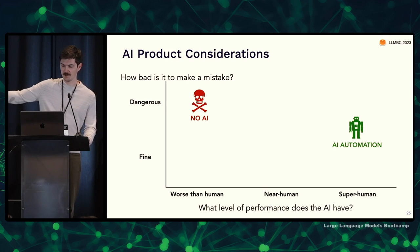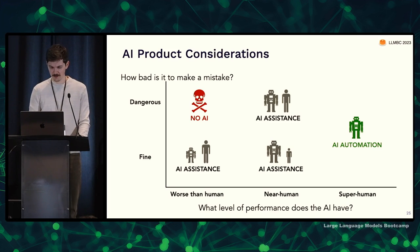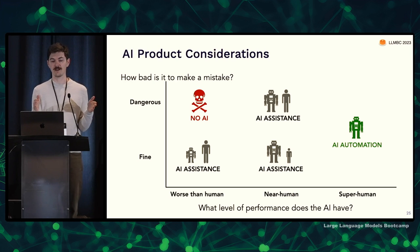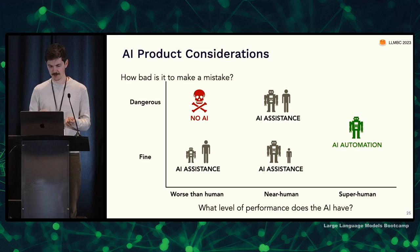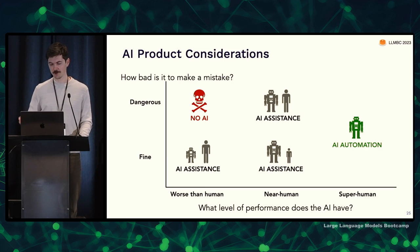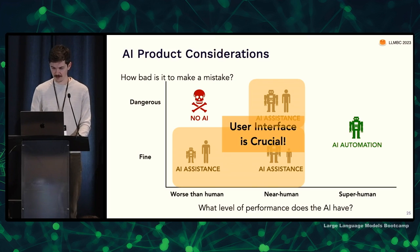If it's superhuman performance, then even if dangerous, let's replace the humans. But everything else is somewhere in between — some level of AI assistance. Maybe it's worse than human but okay to make a mistake, like in education where the instructor controls potential mistakes the AI makes. Or maybe it's near-human performance but dangerous to make a mistake — then the AI could speed the user up, but the user still needs to be there. And because the user still needs to be there, the user interface is really crucial.